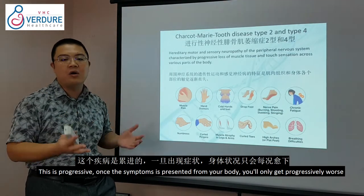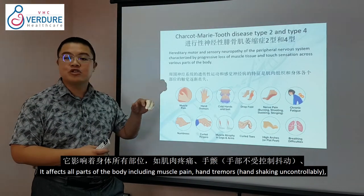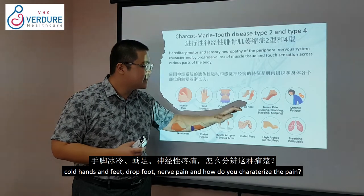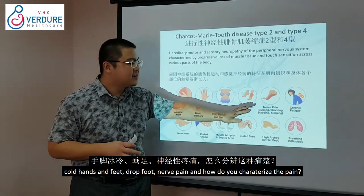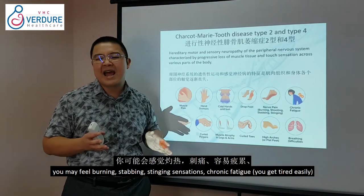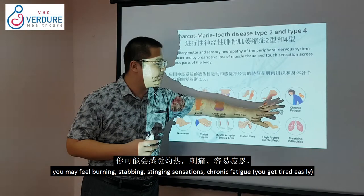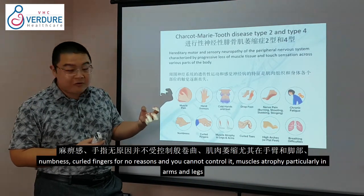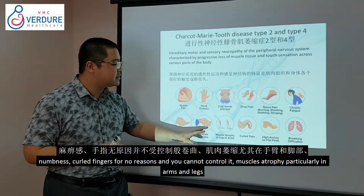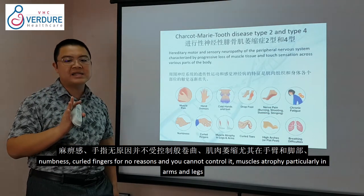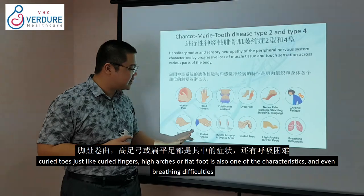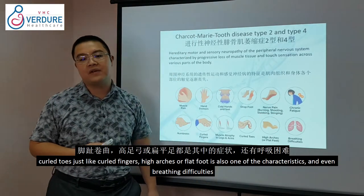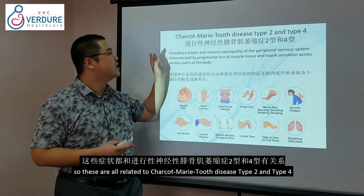The symptoms affect all parts of the body, including muscle pain, hand tremors where your hand shakes uncontrollably, cold pain in the feet, dropped foot, nerve pain which feels like burning or stabbing, chronic fatigue, numbness, curled fingers you cannot control, muscle atrophy particularly in the arms and legs, curled toes, high arches or flat foot, and even breathing difficulties.